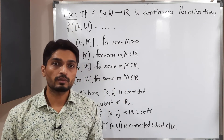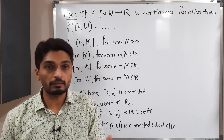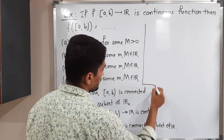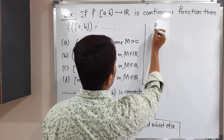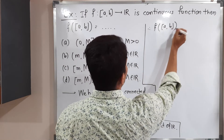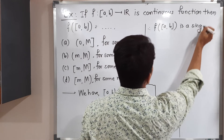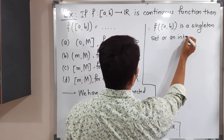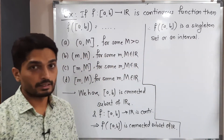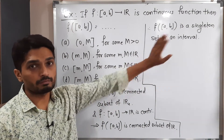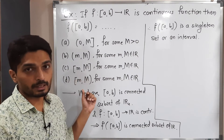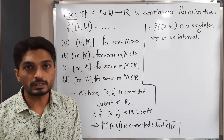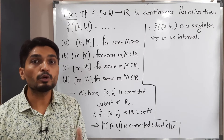Which are the connected subsets of R? Either a singleton set or an interval. So therefore, f of closed interval [a,b] is also a singleton set or an interval. The options we have are all intervals — some are closed intervals, some are open intervals, and some are semi-open or semi-closed intervals.